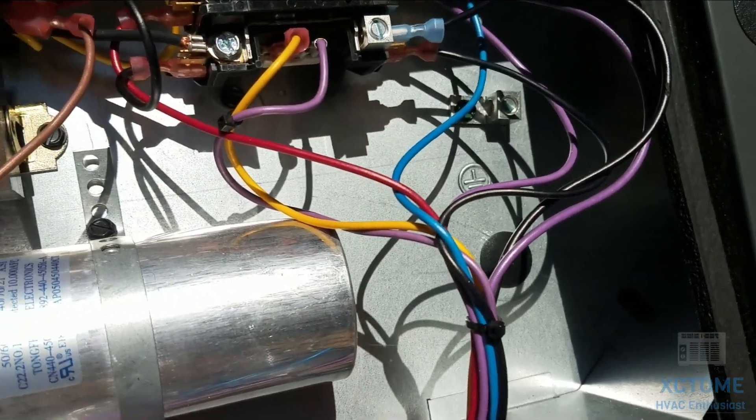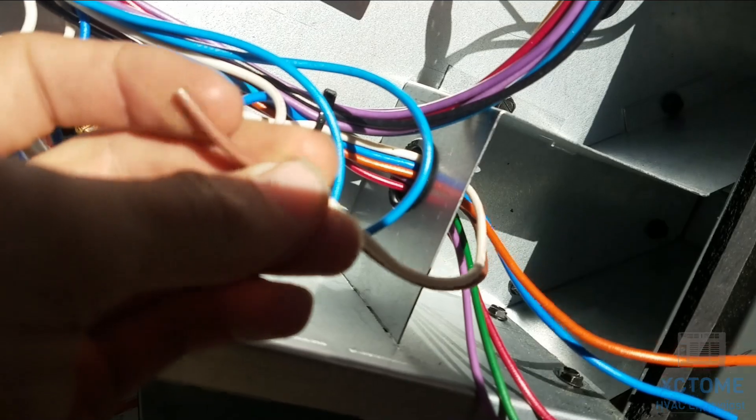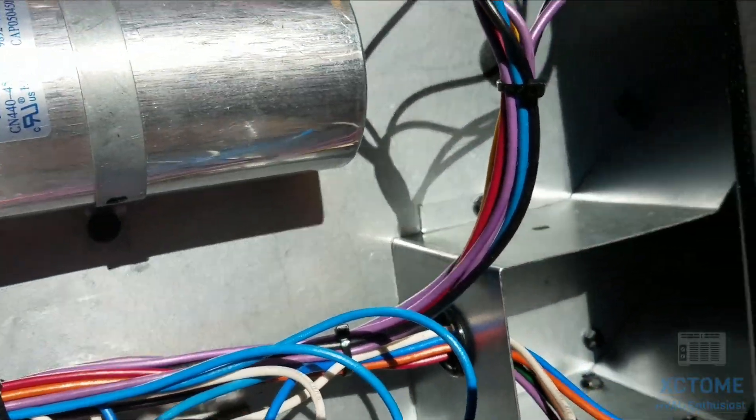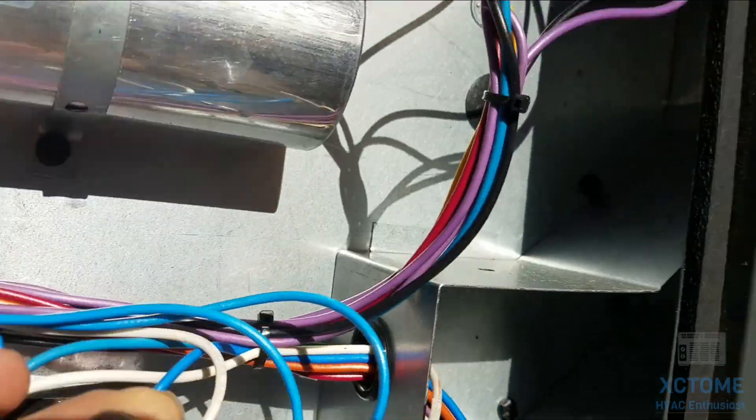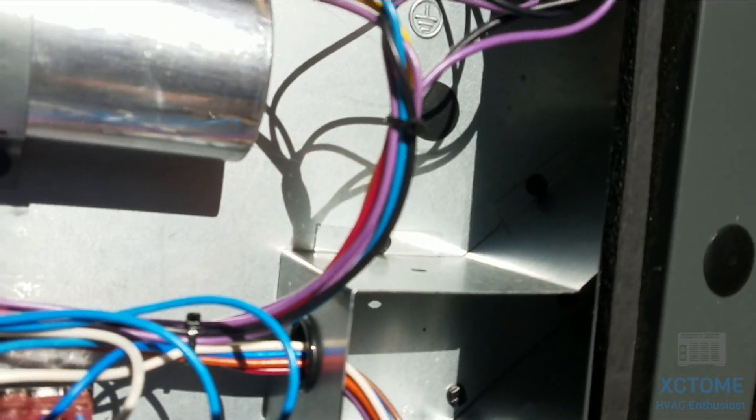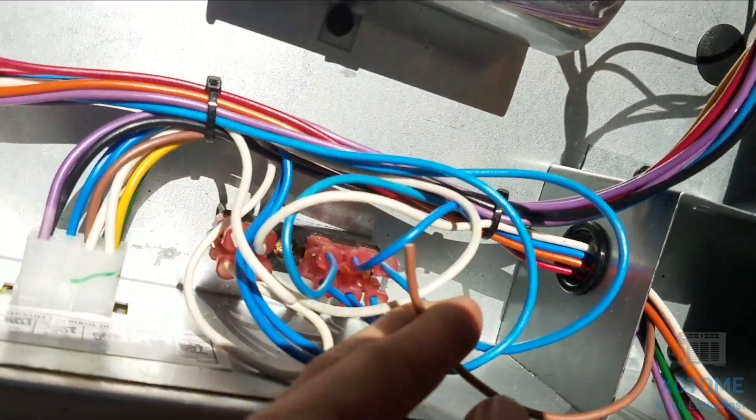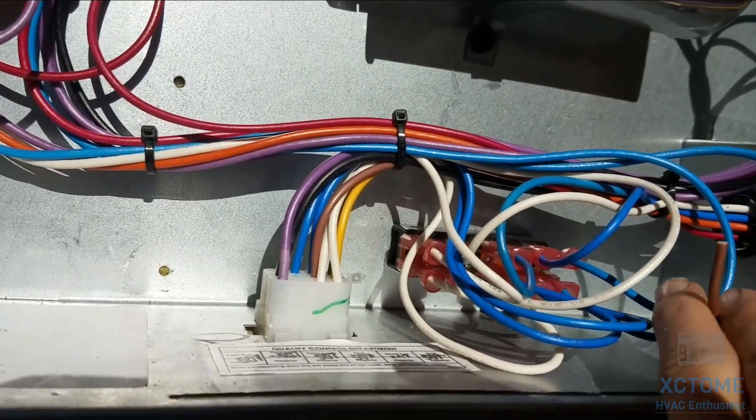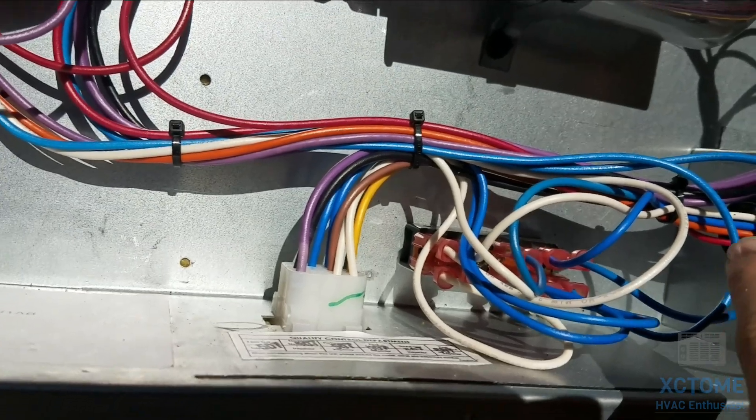These two here, which is white is W2. W1 heat. I'm going to do the heat strips because this is a heat pump, so this one does the heat strips which is optional, which I do have heat strips on. This brown wire here is W2, that would be my emergency heat wire.